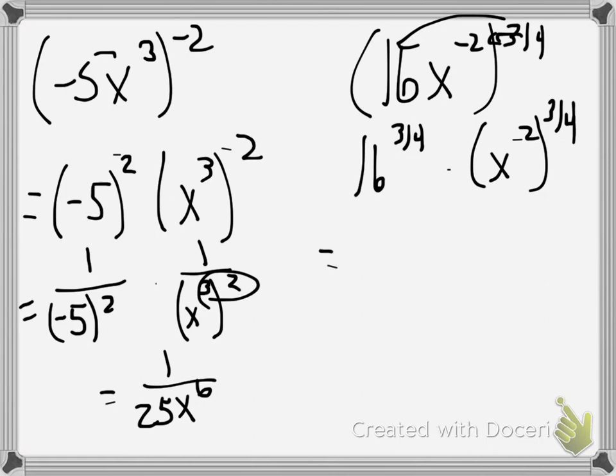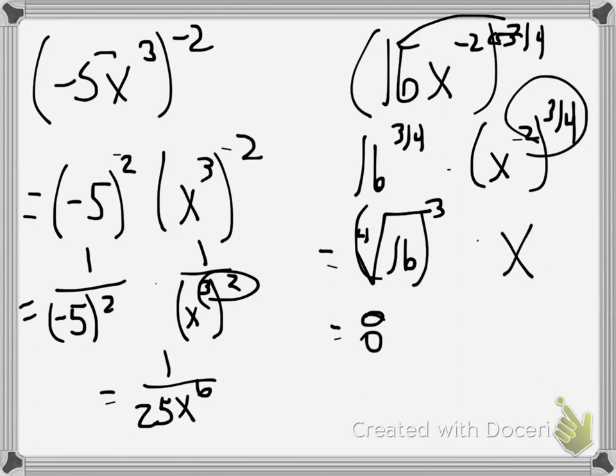Alright, so for the number, well that's like saying the 4th root of 16, and we cube it. So that part's going to be 2 cubed, which is 8, because the 4th root of 16 is 2. And then x to the negative 2 raised to the 3/4ths power. We've got our power to a power again. So we'll multiply the two exponents together. That gets me x to the negative 3 halves.